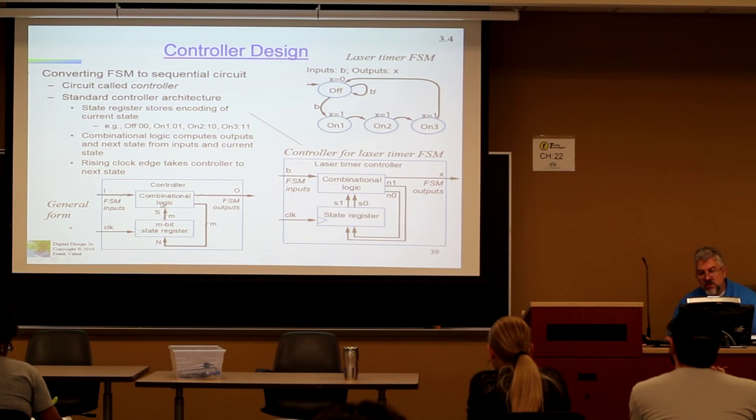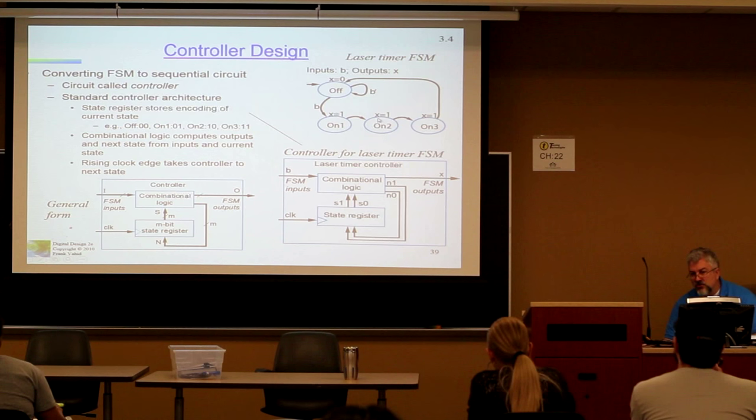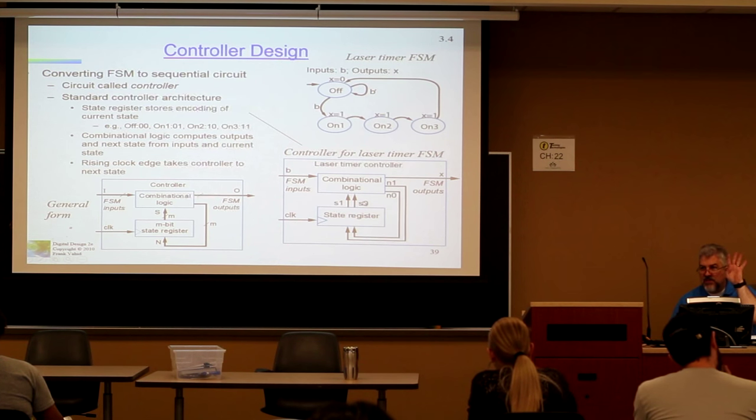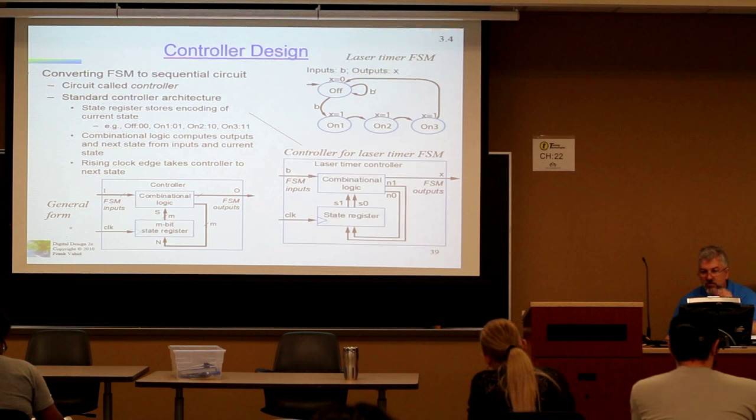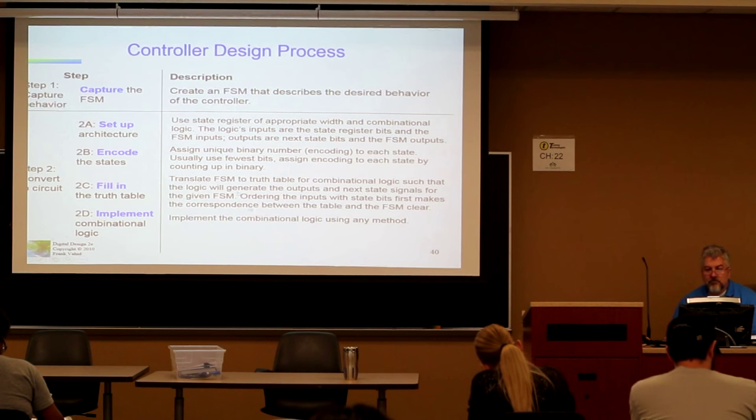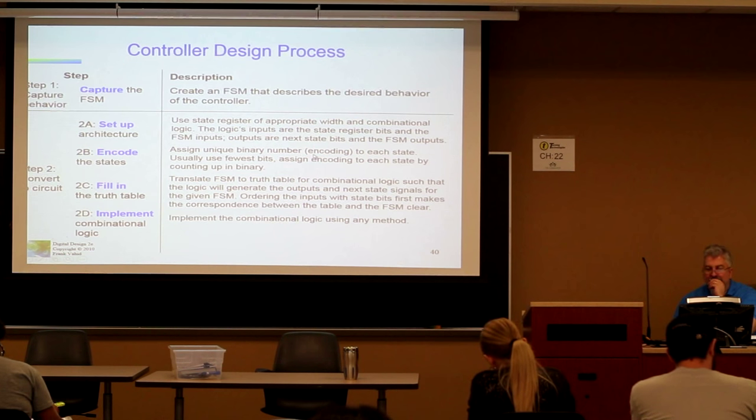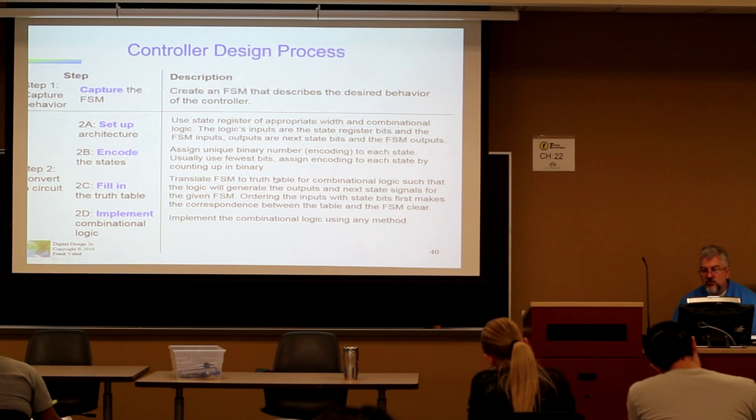Or we'll ask you to follow the steps for the design of a sequential circuit. Oh, you guys are taking pictures, it's in the notes. So you're going to capture the finite state machine. In other words, you're going to create a finite state machine that describes the desired behavior of what you want to do. Hey, there's an example of a finite state machine. It's implied that the transition between states happens on the rising edge of a clock. So you use a state register, a state register, and you can have m bits there. Of the appropriate width and the combinational logic, the logic inputs are the state register bits and the finite state machine outputs are the next state bits. Basically that's describing this.